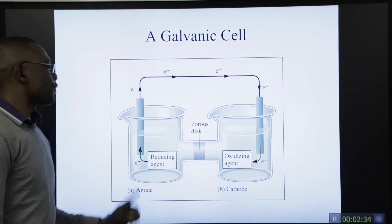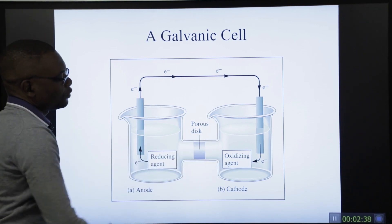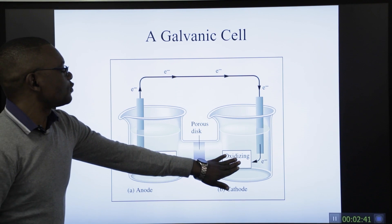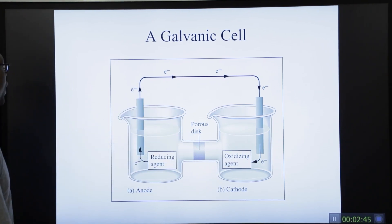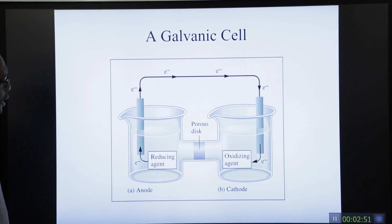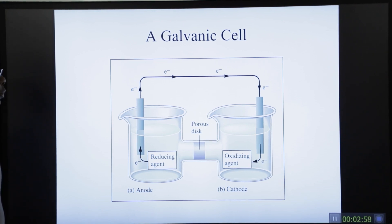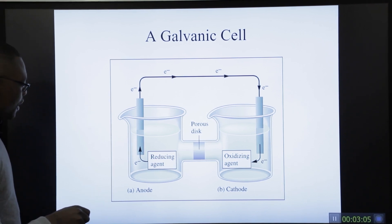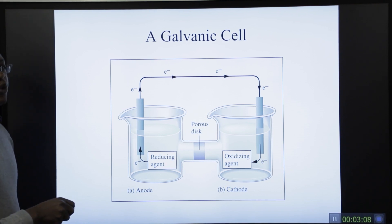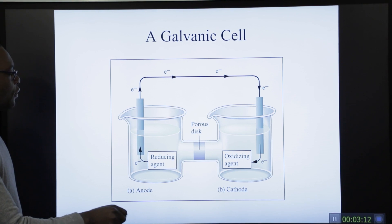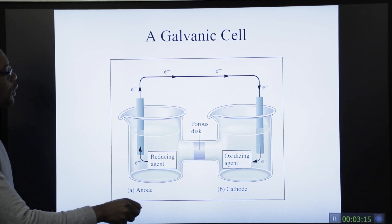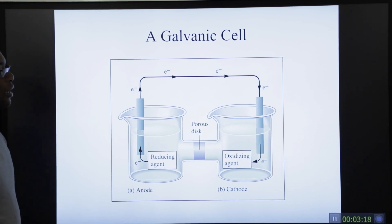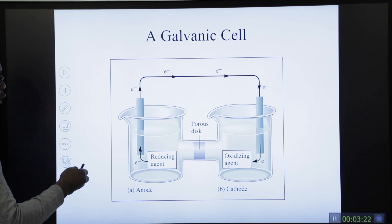The porous disk serves as a filter to separate the ions from one side to the other, completing the circuit. In an exam, if they ask you to draw a galvanic cell, a simple, clearly labeled diagram is very important. The reducing agent loses electrons at the anode, while the oxidizing agent gains electrons at the cathode.